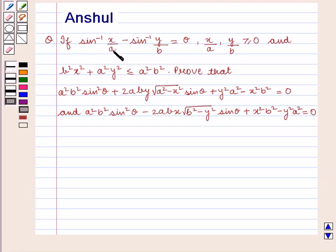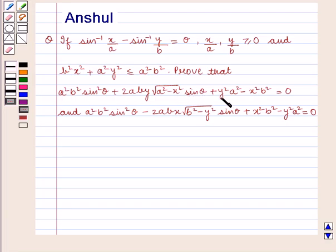The question states: if sin inverse of x/a minus sin inverse of y/b is equal to theta, where x/a and y/b are greater than or equal to 0 and b²x² + a²y² ≤ a²b². Prove that a²b² sin²θ + 2ab·y·√(a² − x²)·sinθ + y²(a² − x²) = 0 and a²b² sin²θ − 2ab·x·√(b² − y²)·sinθ + x²(b² − y²)·a² = 0.